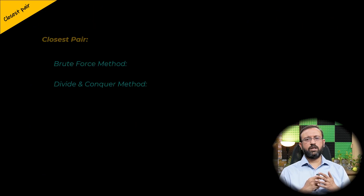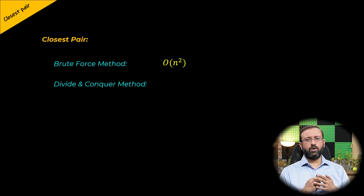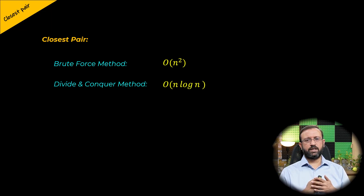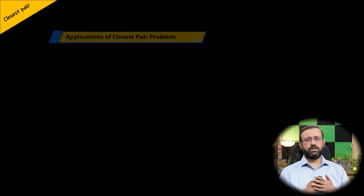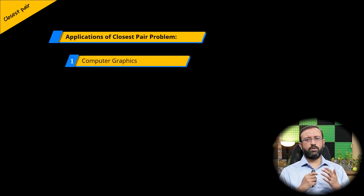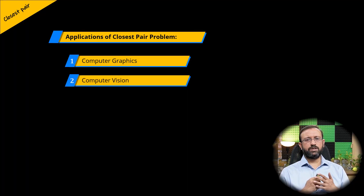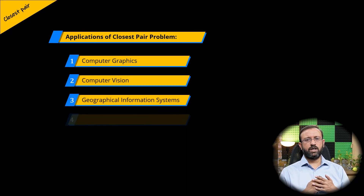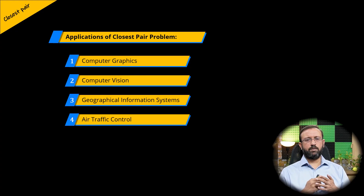Therefore, the closest pair problem using the brute force approach takes O(n²) time, while using the divide and conquer approach takes O(n log n) time, which is much better. There are several applications of the closest pair problem, including computer graphics, computer vision, geographical information systems, air traffic control, and many more domains.